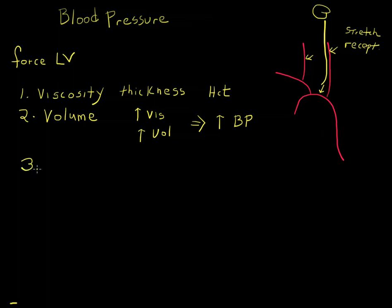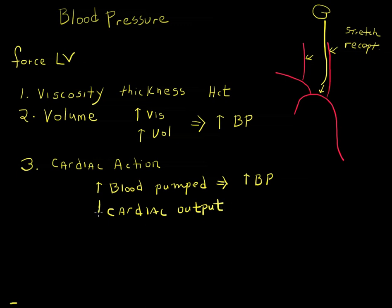Let's talk about things you can control on a short-term basis: cardiac action. Cardiac action just means what the heart is doing. A very simple way to look at this is the more blood the heart pumps out, the higher the blood pressure. We have a way of describing how much blood is pumped out, and we term that cardiac output. So the greater the cardiac output, the higher the blood pressure goes.